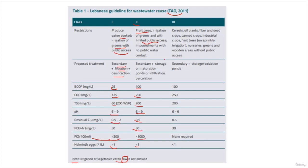Class 3 covers cereals, oil plants, fiber and seed crops, canned crops, industrial crops, food fruit trees with no sprinkler irrigation, nurseries, greens, and wooded areas without public access. The proposed treatment is secondary plus storage oxidation ponds. Requirements are similar to Class 2, but fecal coliforms are not required.